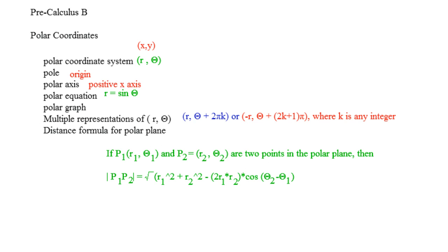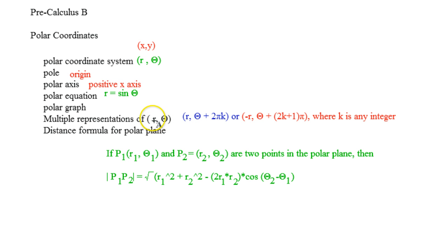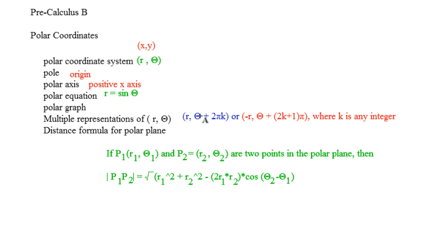Multiple representations of r and theta — you can have multiple representations because you can add or subtract 2πk to theta and get the same representation. Or you can negate r and add an odd multiple of π to theta to get another valid representation of the same point.